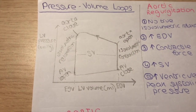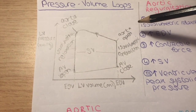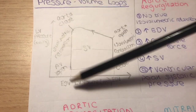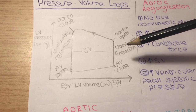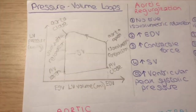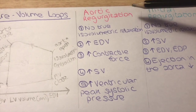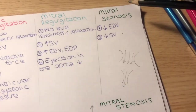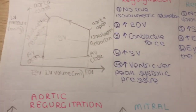Hello everyone. Today I'm going to be talking about the pressure-volume loop. I'm going to explain what each of the points mean and then move on to some pathologies such as aortic regurgitation, mitral regurgitation, and mitral stenosis.